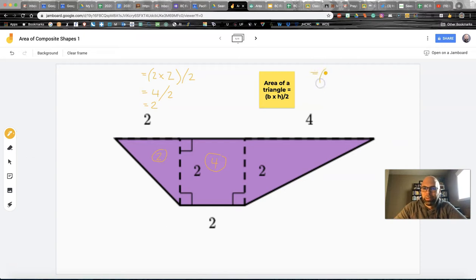We've got base of four and a height of two divided by two. Okay. So what is in the brackets or the parentheses? We've got eight units divided by two equals four.